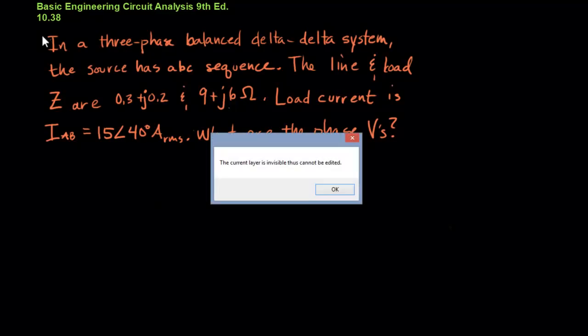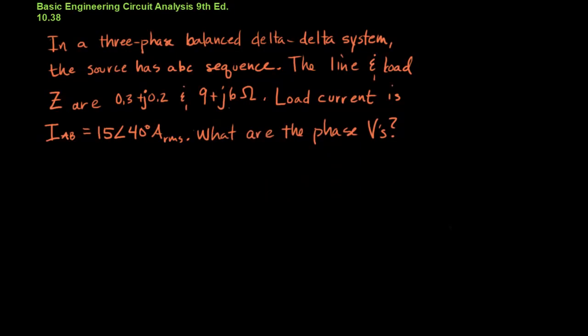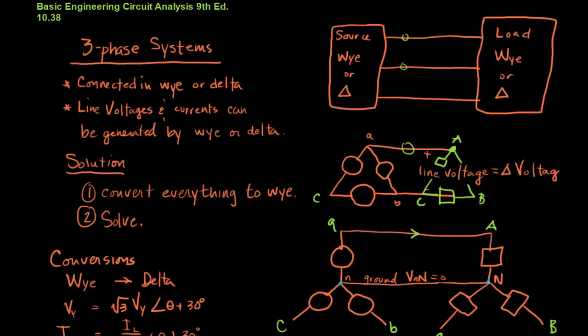Before we start parsing through it, let's take a look at our rules for navigating through a three-phase system. First, three-phase systems can have voltage sources or impedances connected in Y or delta. You can use a lumped circuit abstraction to draw a box around the source and around the load. And in between the source and the load, you'll have three lines.